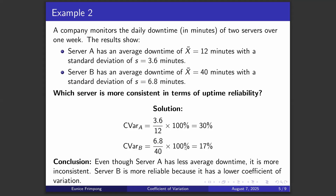Example 2: A company monitors the daily downtime in minutes of two servers over one week. Server A has an average downtime of 12 minutes with a standard deviation of 3.6 minutes. Server B has an average downtime of 40 minutes with a standard deviation of 6.8 minutes. Which server is more consistent in terms of uptime reliability? We can apply the coefficient of variation to find the more consistent one. When you are given the mean and standard deviation, that is an indication you can use the CV as a measure.